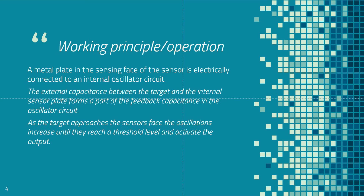A metal plate in the sensing phase of the sensor is electrically connected to an internal oscillator circuit, meaning that inside the capacitive sensor there lies an internal oscillator circuit. The external capacitance between the target and the internal sensor plate forms part of the feedback capacitance in the oscillator circuit. As the target approaches the sensor phase, the oscillations increase until they reach a threshold level and activate the output.